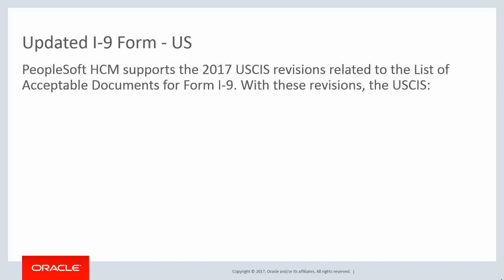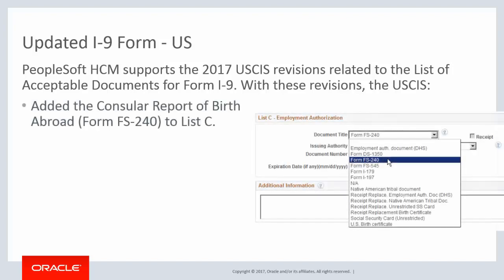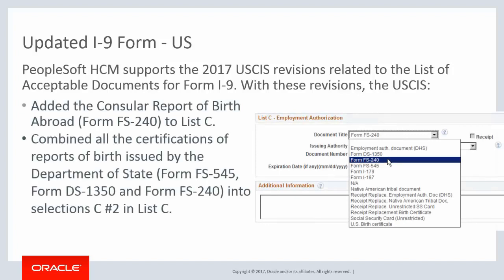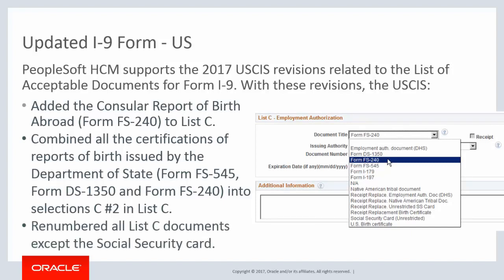The United States Citizenship and Immigration Services published the approved I-9 form changes effective July 17, 2017. The revisions related to the list of acceptable documents are also reflected in PeopleSoft HCM. These changes are related to List C for the employer and include the addition of Form FS-240, the combination of all certifications of reports of birth issued by the Department of State, and the renumbering of List C documents.